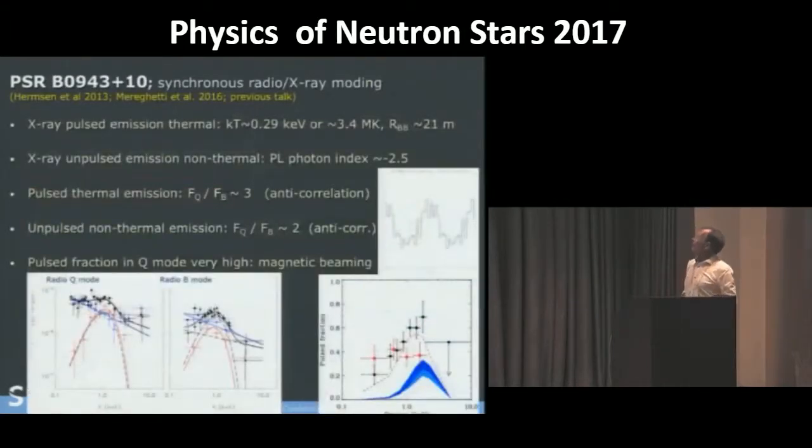Sandro already presented the result for B0943. The interesting thing there is indeed that we have in the Q mode it is brighter than in the B mode. The thermal emission goes down by a factor of 3, the non-thermal emission by a factor of 2. But it is anti-correlation. So when the radio is bright, the X-rays are weak. It has a very broad profile. And the pulse fraction in the Q mode is getting very high. And that is very difficult to explain.